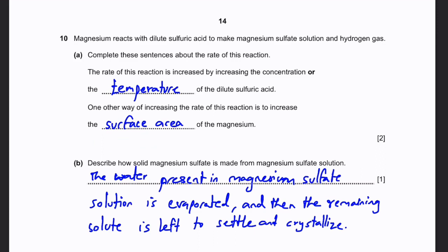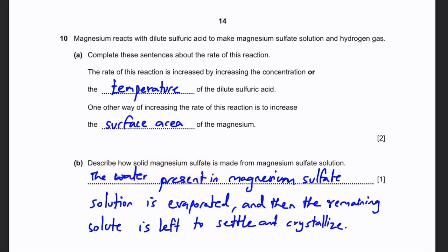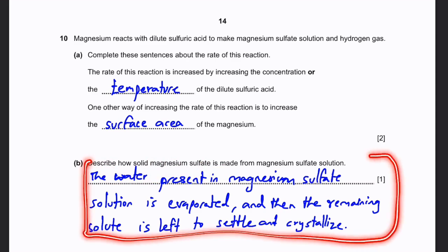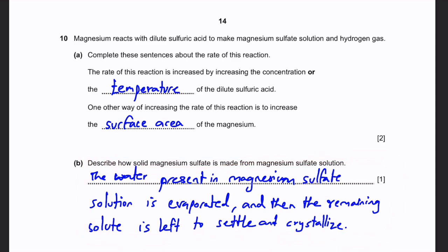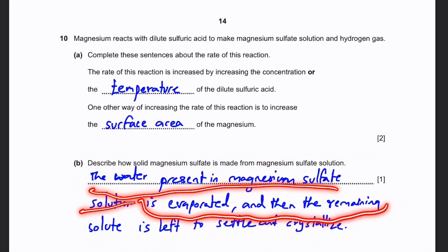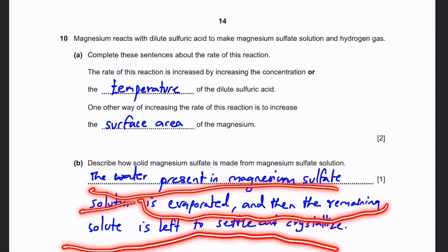Describe how solid magnesium sulfate is made from magnesium sulfate solution. We need to describe the process of crystallization in detail: the water present in the magnesium sulfate solution is evaporated, and then the remaining solid is left to settle and crystallize.